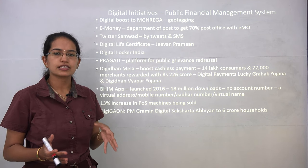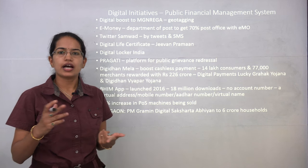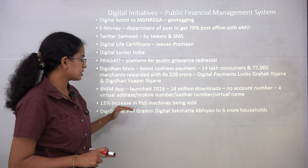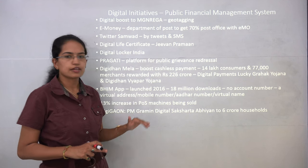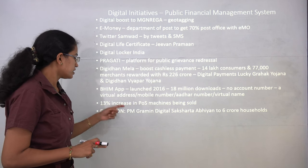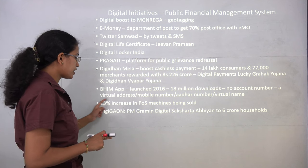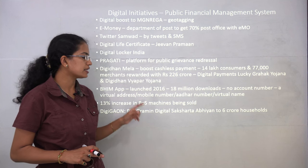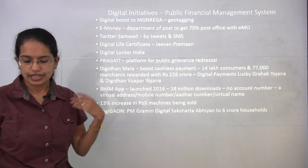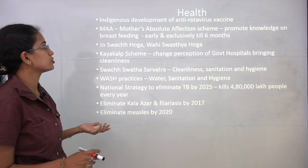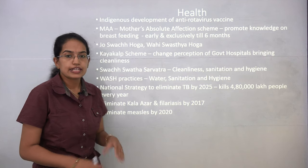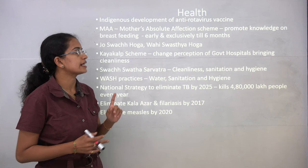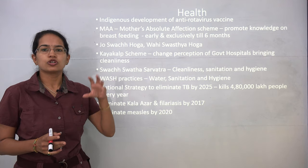DigiGaon involves the Pradhan Mantri Grameen Digital Saksharta Abhiyan, aiming to reach nearly 6 crore households. In the field of health, anti-rotavirus vaccines have been provided. The MAA scheme — Mother's Absolute Affection — promotes knowledge for exclusive breastfeeding for the first six months.